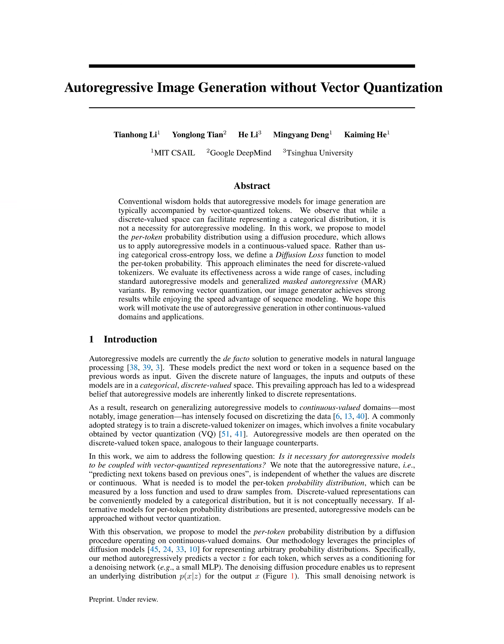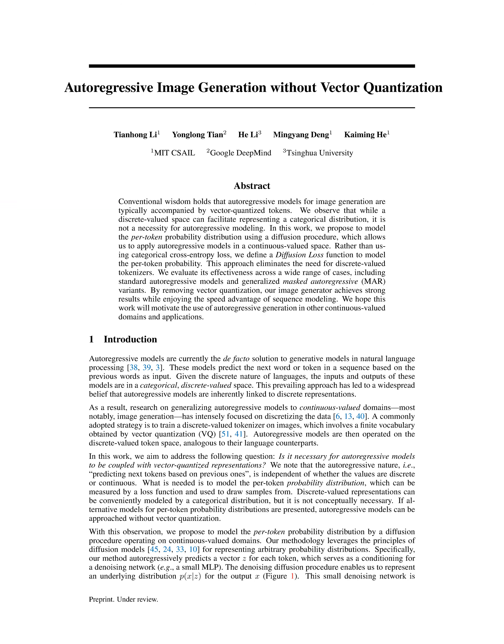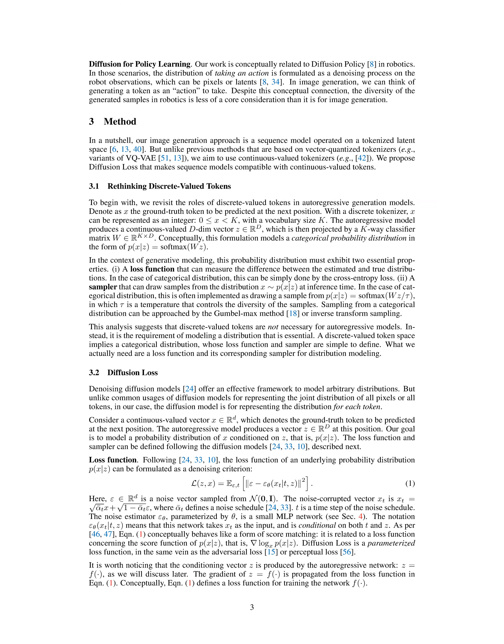The proposed method for image generation operates as a sequence model on a tokenized latent space using continuous-valued tokenizers instead of vector quantized tokenizers. The key innovation lies in the integration of diffusion loss into the autoregressive model. Firstly, the autoregressive model predicts a conditioning vector z-carat-i for each token based on previous tokens. This vector z-carat-i is then used to model the probability distribution of the next token x-carat-i as p(x-carat-i | z-carat-i).